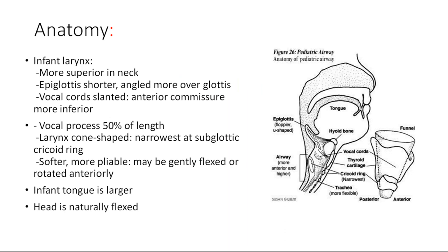In the previous PowerPoint presentation, I have already told about the anatomy of the larynx, but this will be a short form. First, about the infant larynx: it is more superior in the neck, the epiglottis is shorter and angled more over the glottis, the vocal cords are slanted, and the anterior commissure is present more inferiorly. These are the distinguishing points — the larynx lies more superior in the neck in the case of infants.